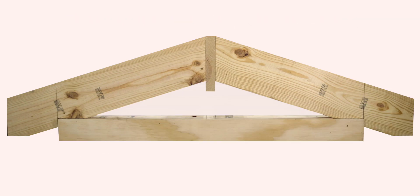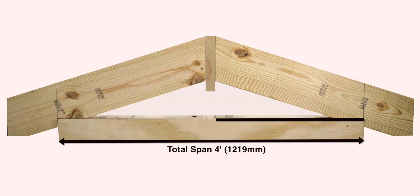First is the total run. Total run is half the distance of the total span or width of the building, minus half the thickness of the ridge board material. For our mock-up, the total run is 23 and a quarter inches.